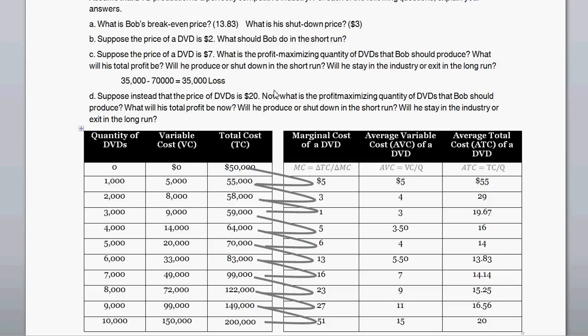However, in the long run, should the market price continue to be $7, this firm will choose to shut down. But that's in the long run. In the short run, firms are stuck with their fixed costs, so this firm continues to produce because it brings down their overall loss. In the long run, the firm gets to decide whether to spend money on fixed costs — so in the long run, this firm would choose to exit.